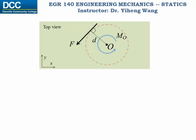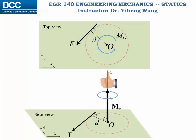For example, in the 2D plane shown here, when a force is creating a moment about a point O, it is in fact creating a moment vector along the positive z-axis, as shown in this side view demonstration. In the 2D plane, the moment vector cannot be visualized, but you can imagine it to be the head of an arrow shooting out of the plane, represented by a dot.